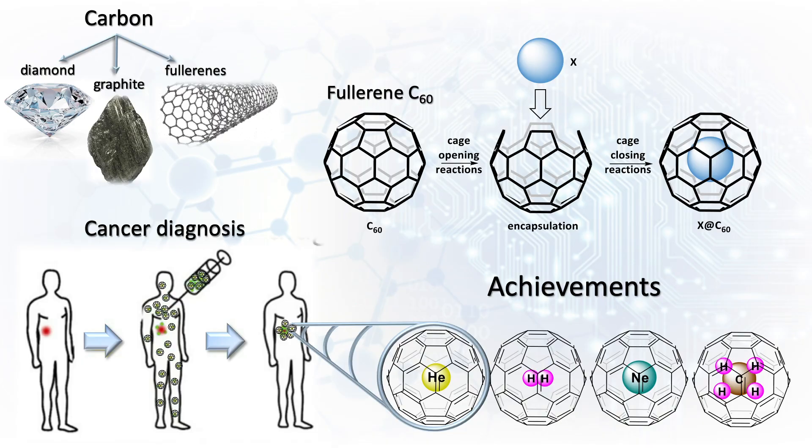However, we cannot use this method to detect cancer anywhere else in the body because we cannot inject helium gas into the bloodstream. On the other hand, it is safe to inject helium atoms enclosed inside C60, dissolve them in solution. We can then attach them to cancer-seeking molecules that can latch themselves onto cancer cells. And patients would then be scanned from head to toe, and the MRI scan will reveal even the smallest signs of cancer.